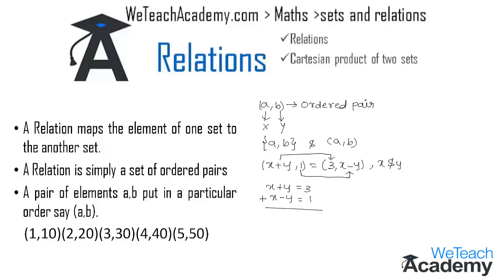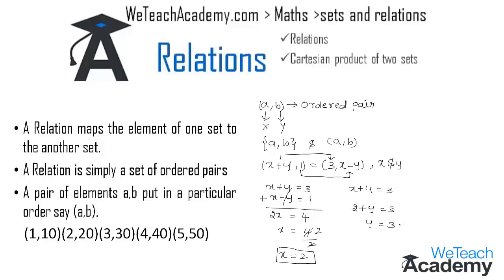By adding the two equations, x+y and x−y give 2x on the left side, while +y and −y cancel. On the right-hand side, 3+1 = 4, so 2x = 4, which gives x = 2. Substituting x = 2 into x+y = 3, we get 2+y = 3, so y = 3−2 = 1. Therefore x = 2 and y = 1.